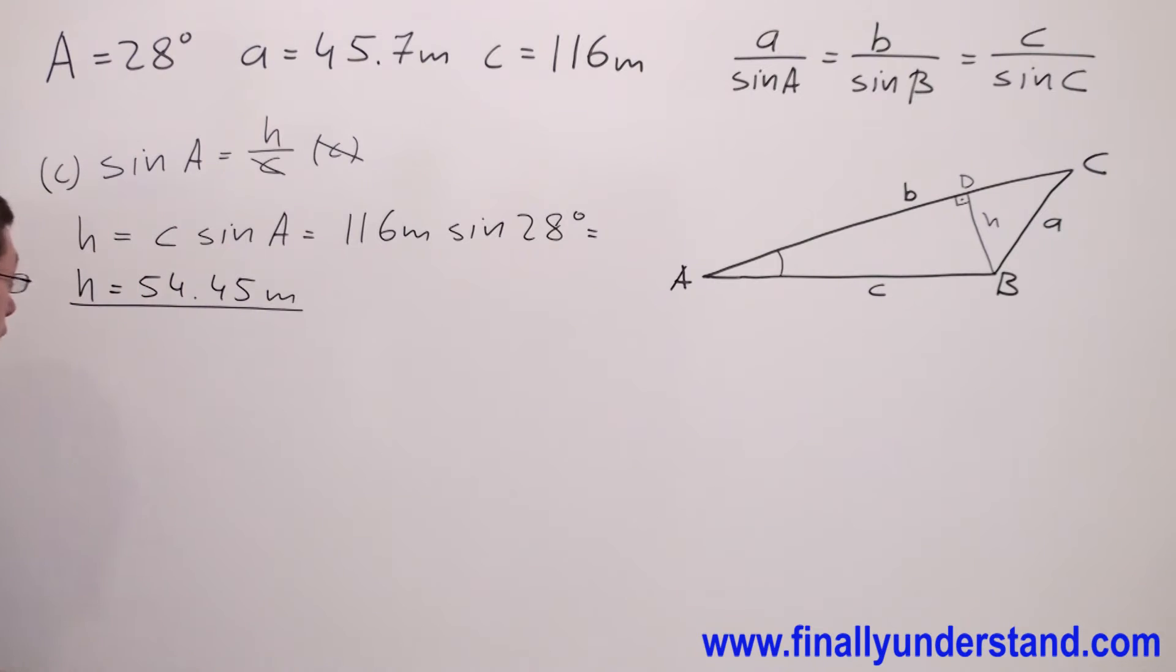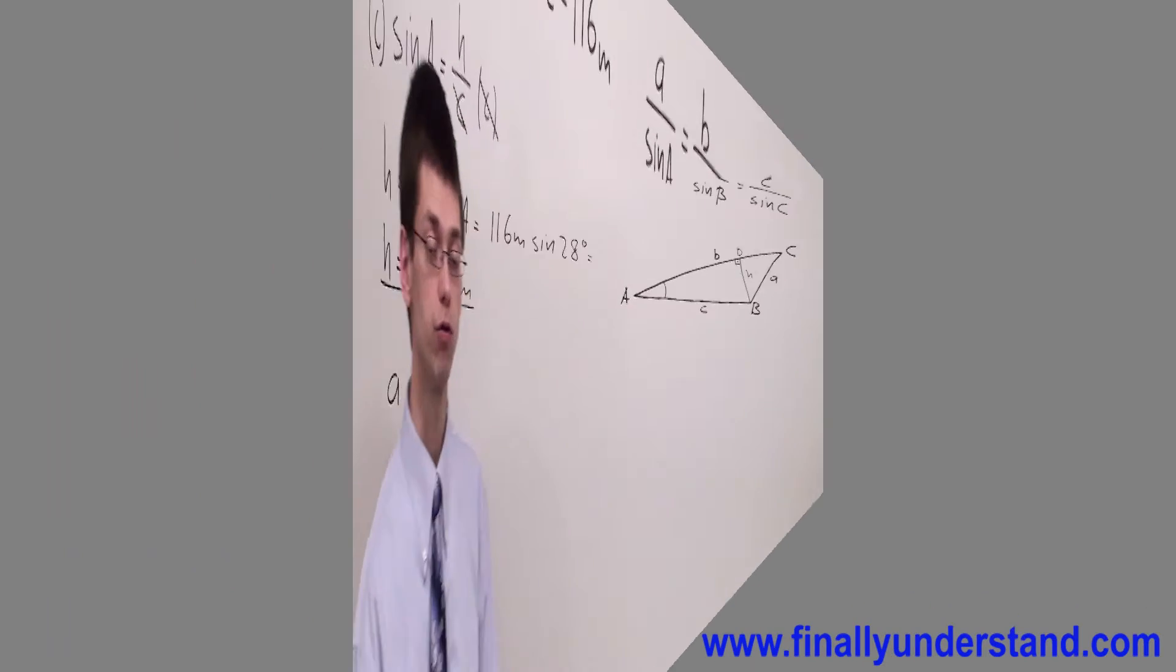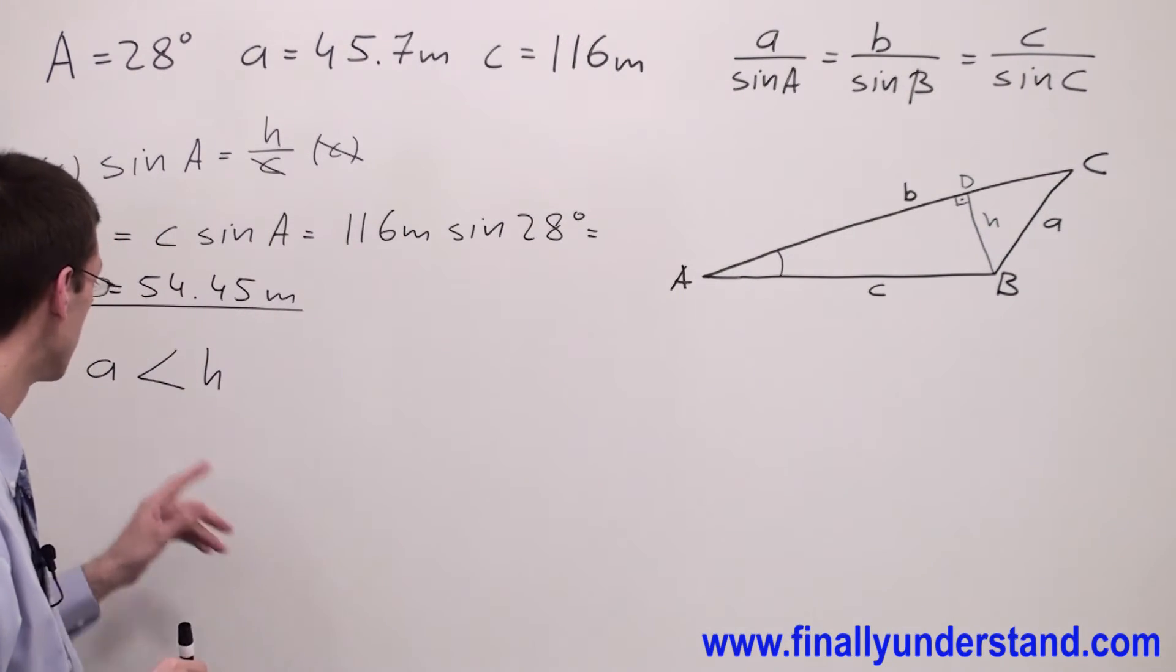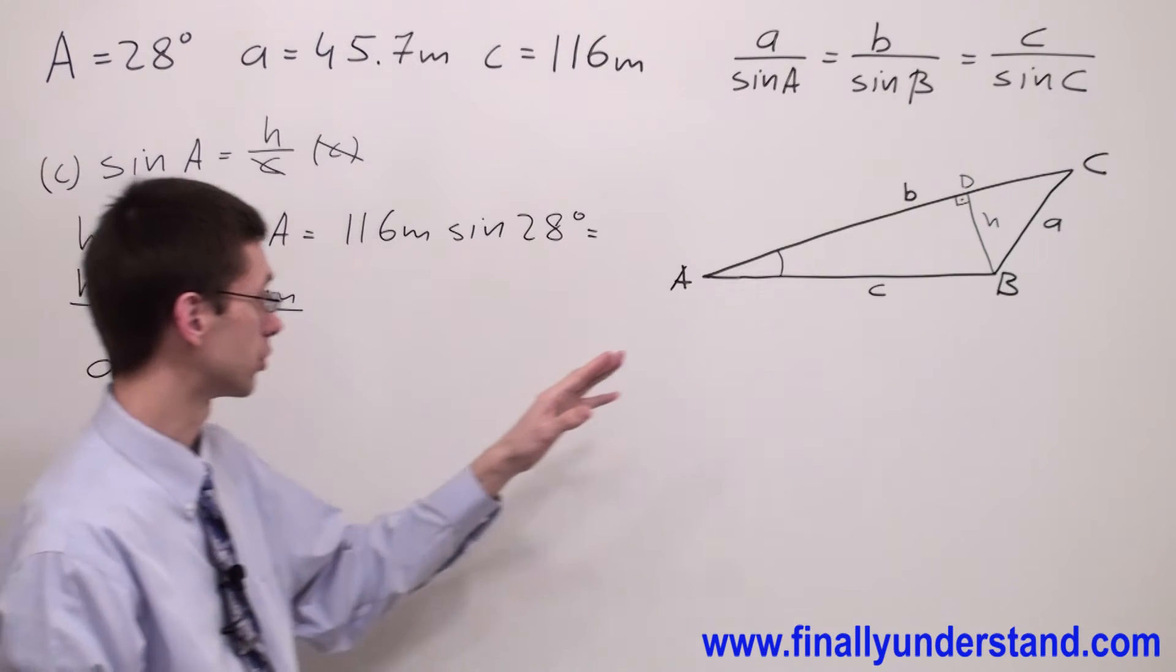So in order to find out how many solutions we are going to have, let's check the lengths of the given sides and the altitude. Please notice that side A is less than the altitude, so it means that we have no solution. The triangle cannot be formed. What I mean by that? Let's take a look at the picture.